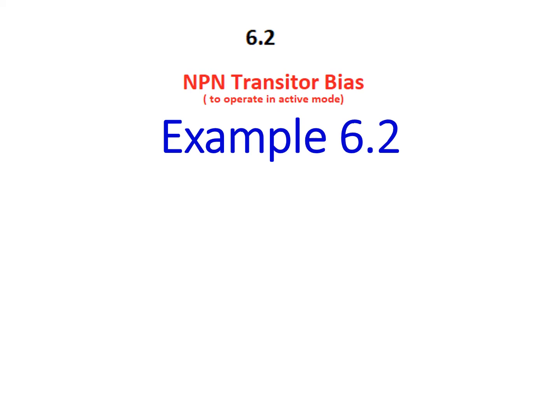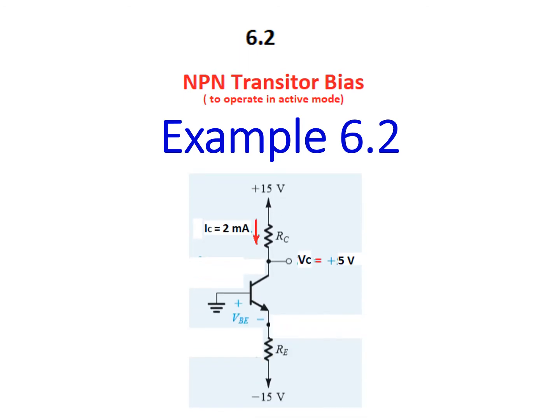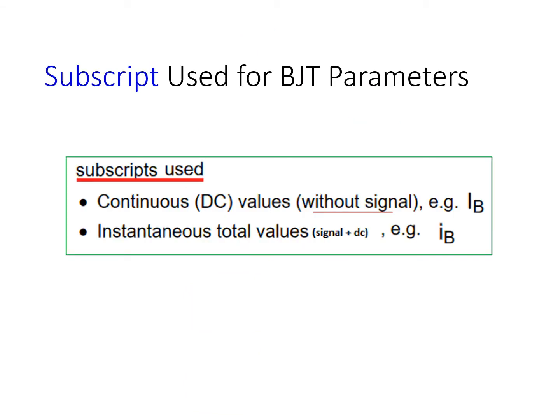Bismillahirrahmanirrahim. This video will discuss NPN transistor bias and primarily we'll be solving example 6.2. Before we solve, let's have some concepts. Many students are confused about the symbol — when both letters are capital and when one letter is smaller and one is capital.